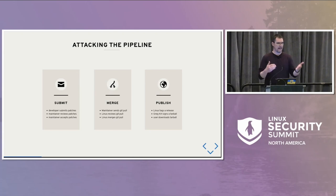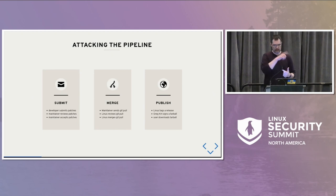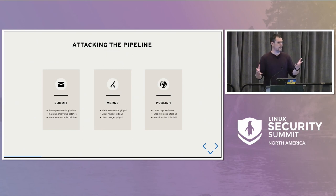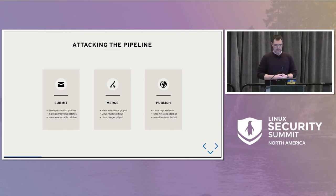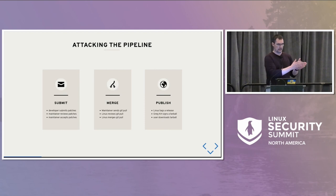The pipeline looks like this: there is a submission point where people submit patches, maintainers review and accept or reject patches, and rejected patches cycle back. There's a merge stage where sub-maintainers send pull requests, Linus reviews and either accepts or rejects them, and then merges into mainline. Then there's a publish point: Linus tags the release, Greg Kroah-Hartman signs the tarball, and users download it. That's the pipeline for getting a change into the Linux kernel.